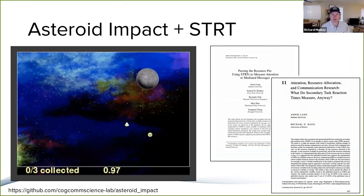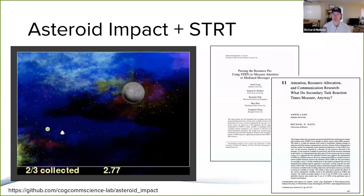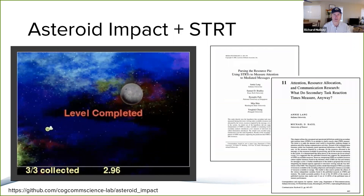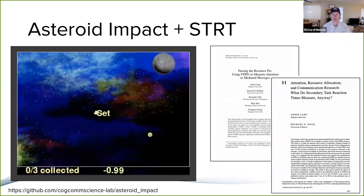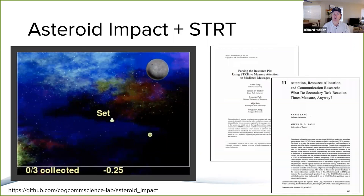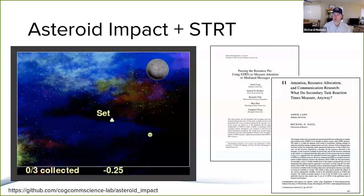One feature of the game is a reaction time component, or response latency component. Basically, you present a probe and measure the latency between the onset of the probe and when the participant responds. This is a classic secondary task reaction time measure, or STRT, in the way that Annie Lang and her colleagues have described it. In Asteroid Impact's case, you can present two types of probes: visual probes, where something appears on the screen, or an auditory probe, where some sort of tone is made available for the participants to hear.